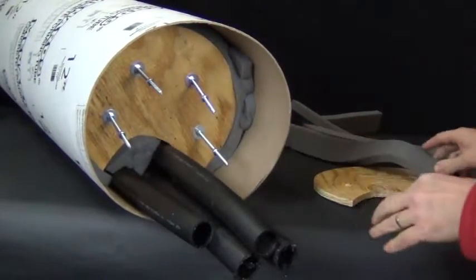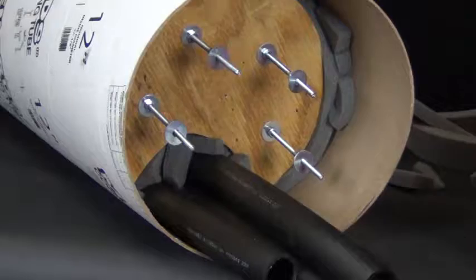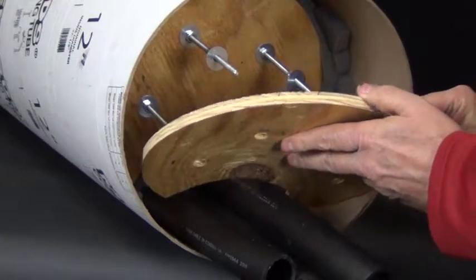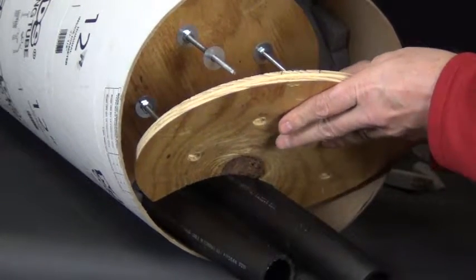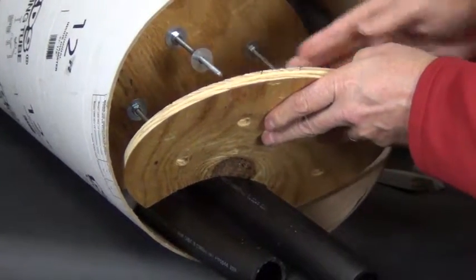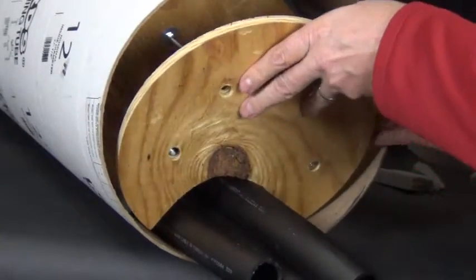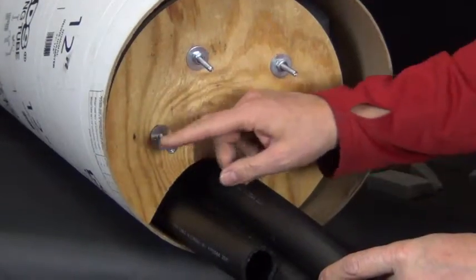You're ready to install the second piece of wood. First of all, put the washers on the bolts and then install the second piece of plywood. Then secure it into place with another washer and nut.